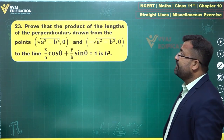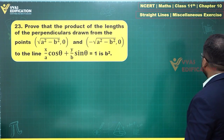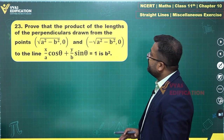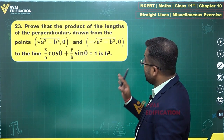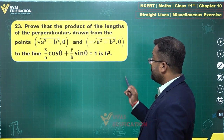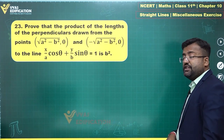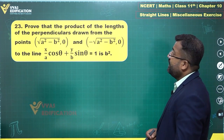Let's discuss the 23rd question which says: prove that the product of lengths of perpendiculars drawn from the points (√(a²−b²), 0) and (−√(a²−b²), 0) to the line x/a·cosθ + y/b·sinθ = 1 is b².